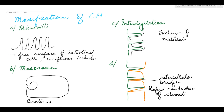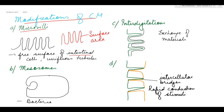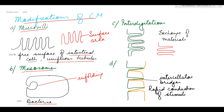Next are the modifications of the cell membrane. First, microvilli — these are finger-like projections which increase the surface area, usually present in intestinal cells and uriniferous tubules. Next, mesosomes — these are in-foldings of the cell membrane that increase the surface area, seen in bacteria. Interdigitations are finger-like projections of adjacent cells that are interlocked with each other, helping in the exchange of materials. Intercellular bridges are bindings of tubular membranes that help in rapid conduction of stimuli.